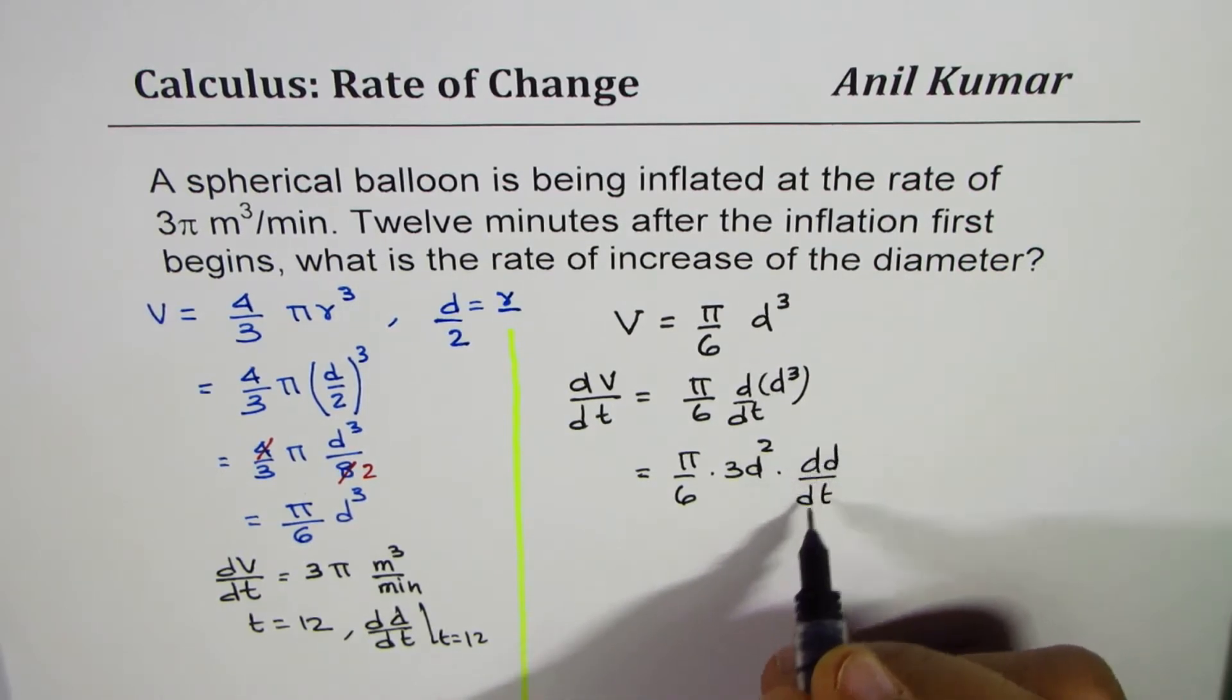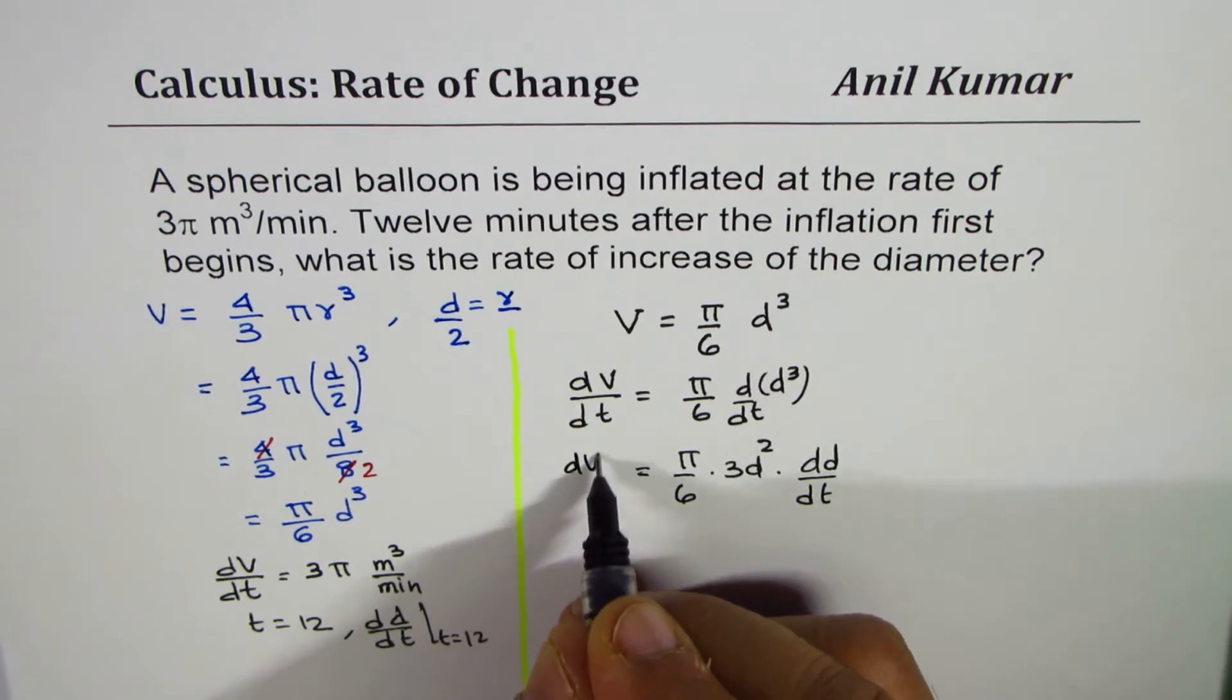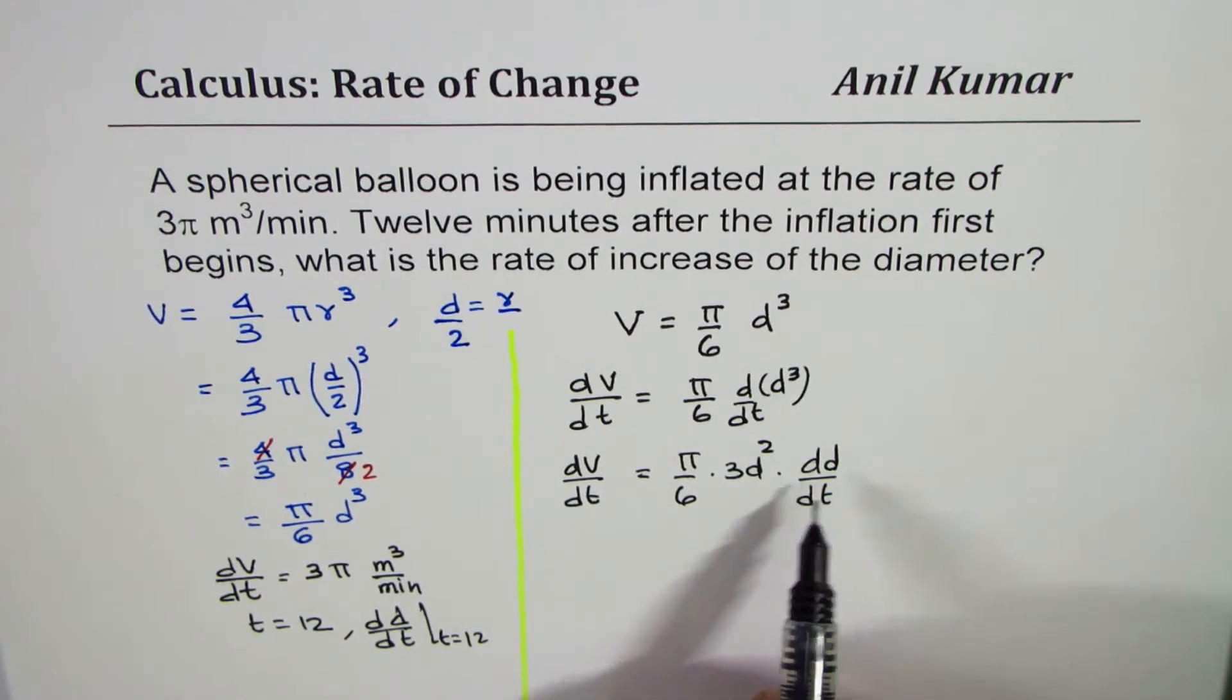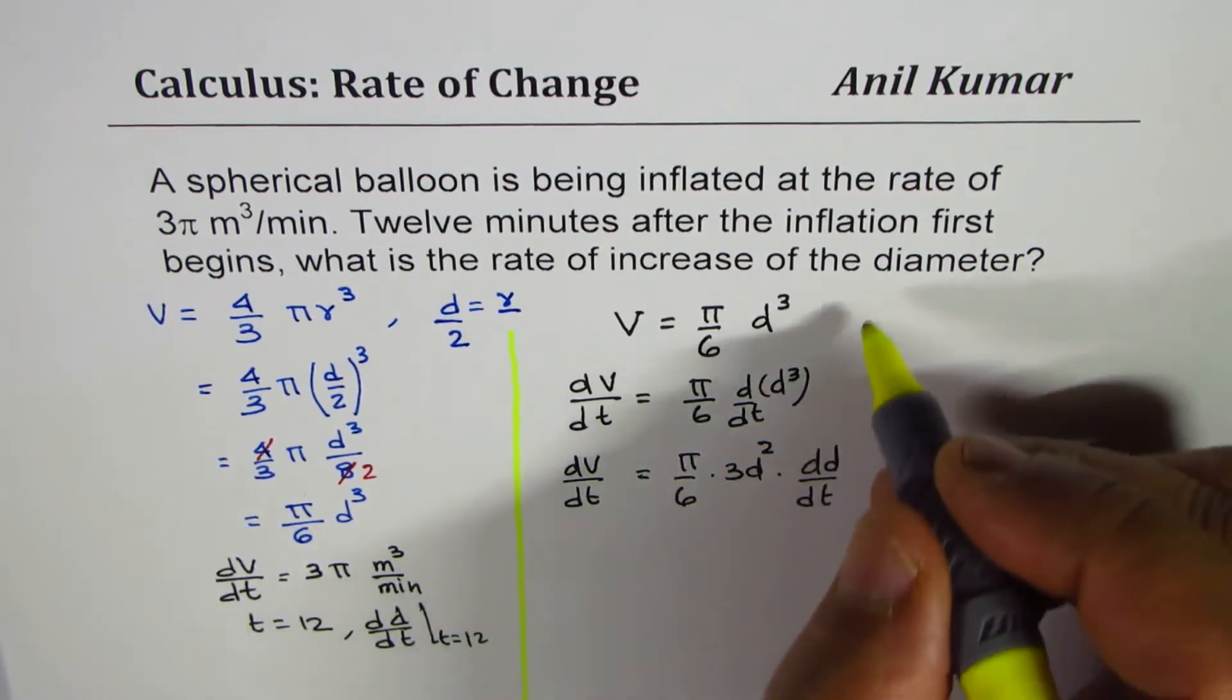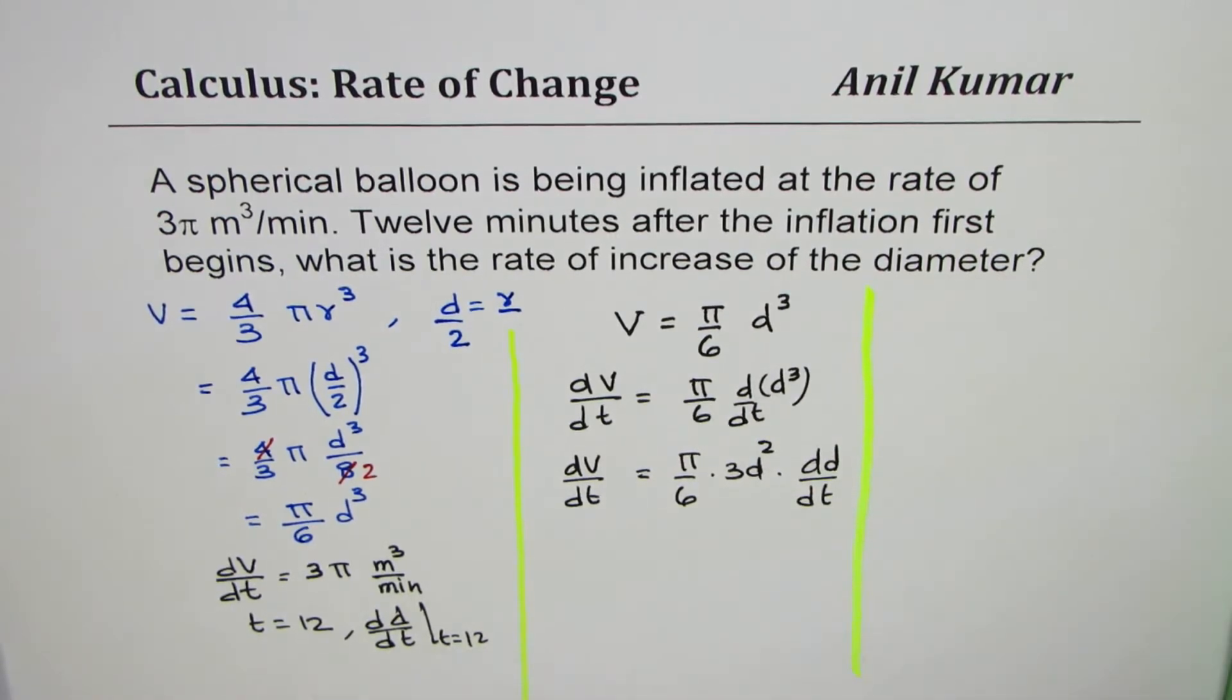We need to find rate of change of diameter when t is 12. Now, what is d at that time? We didn't find that, so we have to still find what d is when t is 12.